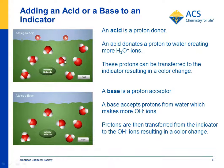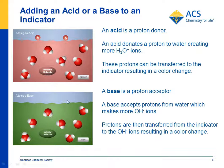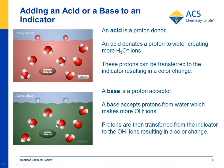Those protons can be transferred to the indicator molecule, and that makes the indicator molecule change in a way that changes the color. Bases are often referred to as proton acceptors, because when a base is added, protons from water are accepted by the base, leaving OH- ions. The indicator molecule then gives up its proton to the OH- ions, changing the indicator molecule and causing the color change.